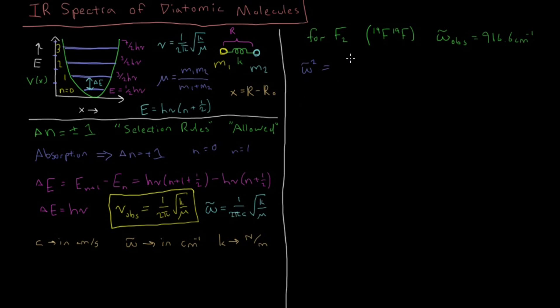Omega bar squared equals one over four pi squared C squared K over mu. And then to simplify that, what we're just going to have is K multiplied by all the stuff on the bottom by both sides. When you square it, you get a 4 here. This 2 pi goes to a 4 pi squared. So we get 4 pi squared C squared mu omega bar squared.